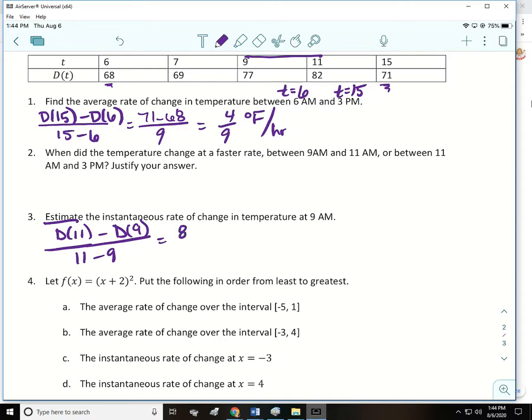D of 11 is 82, D of 9 is 77, over 2. So that's 5 halves of a degree Fahrenheit per hour. That is not the only estimate. Last class I did it between 7 and 11. We could have also done between 9 and 7. Those are all estimates. The closer you get to 9, the better the estimate is.